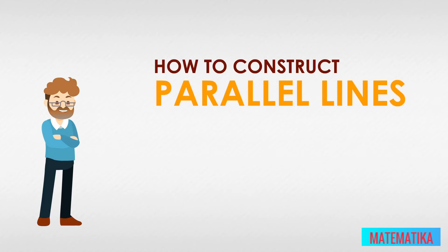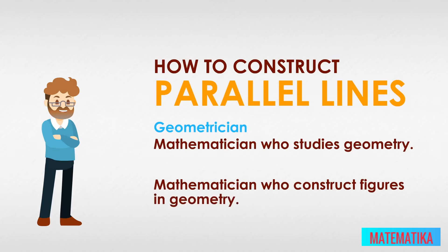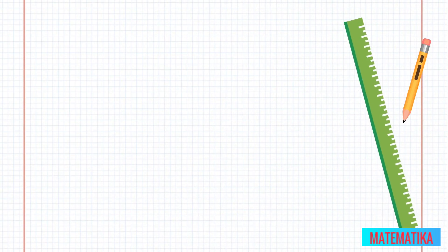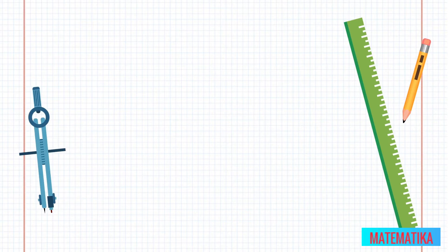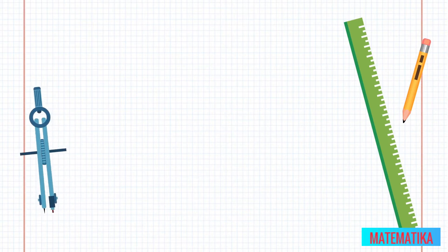A geometrician is a mathematician who studies geometry. When you construct figures in geometry, you are a geometer. To construct parallel lines, you need these four simple tools: paper, pencil, a straight edge like a ruler or any straight, thin, smooth object, and a compass — not the kind for direction, but the kind with two legs, one with a point and one with a pencil.